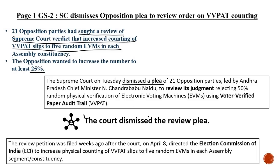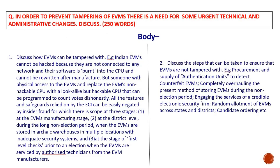The court dismissed the review plea, saying that with elections ongoing right now, it cannot again increase the number of VVPAT machine inspections as it would cause problems during the ongoing elections. A question that can be asked on VVPAT machines: 'In order to prevent tampering of EVMs, there is a need for some urgent technical and administrative change. Discuss in 250 words.' How will you write the answer?